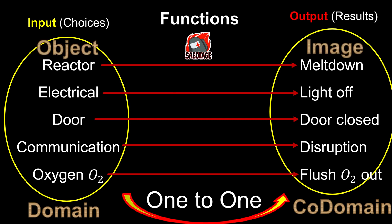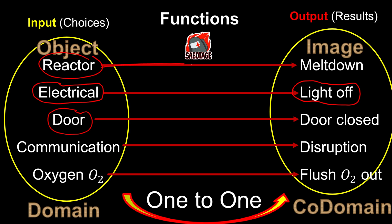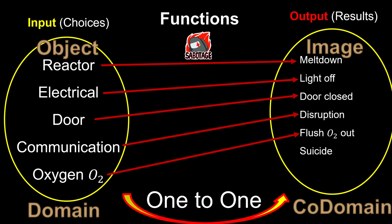We also have the terms object and image. An object is a single choice — for example, electrical is one object in the domain, and door is also one object. An image is the individual result — for example, 'lights off' is one image. So if I ask: what is the image of reactor? We go to reactor and find its partner, and we see that meltdown is the image of reactor. If I ask: what is the object of disruptions? We link it back and find that communication is the object.